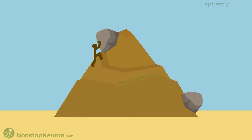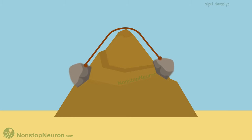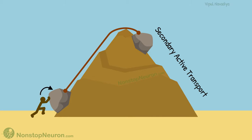Now at the base there is another rock that we want to move up. Of course we can move it manually, but with this rock already at the top, we have one more option. We can tie both the rocks with a rope and let the first rock slide down. This will move the other rock uphill. This is secondary active transport. It's secondary because we have first put the energy into this rock in the form of high altitude, and that energy is secondarily used to move the other rock up.